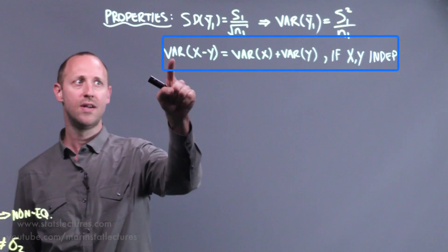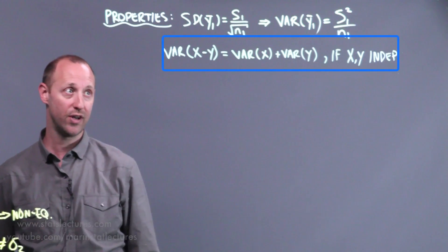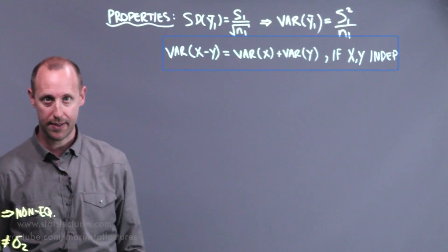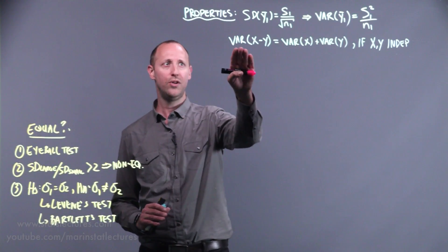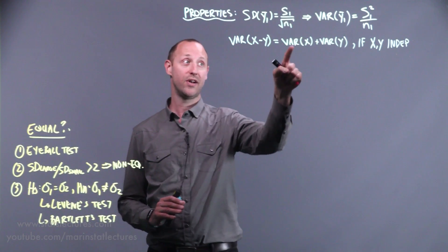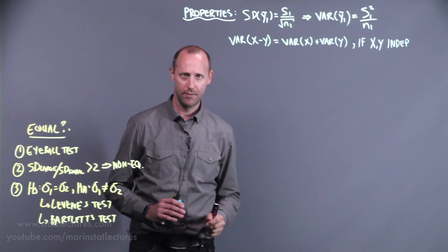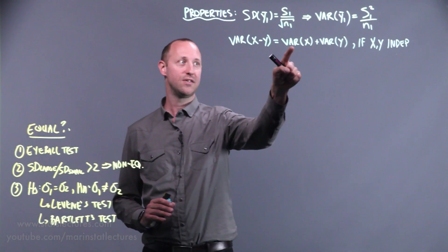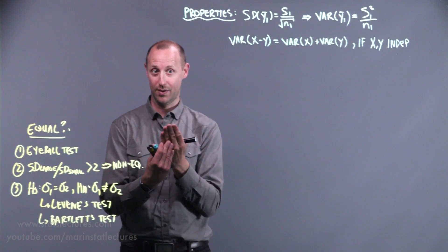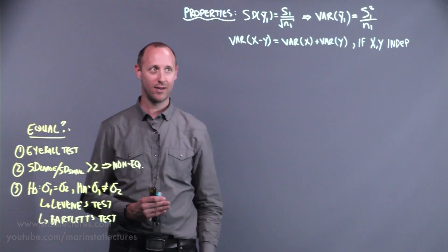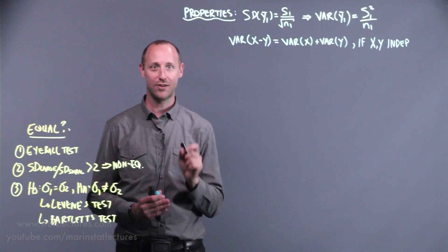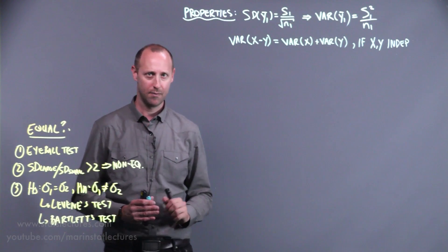We also have the property that the variance of X minus Y equals the variance of X plus the variance of Y, if X and Y are independent. This is not a typo. If you subtracted the variances and they were equal, you'd get zero — which doesn't make sense because taking a difference between two variables shouldn't reduce variability.